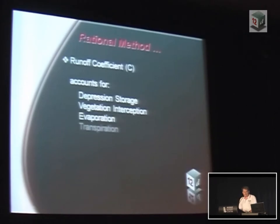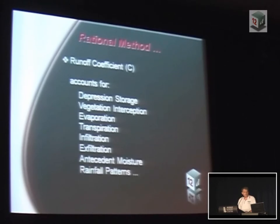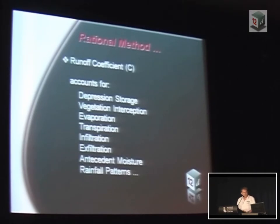The C value accounts for depression storage, vegetation, evaporation, transpiration, exfiltration, infiltration, antecedent moisture — a whole bunch of things. So we're really confidently saying, well, that's 0.6. And then the council says, what about global warming? So okay, it's 0.7 then. We know that one pretty well; we're all happy with that.